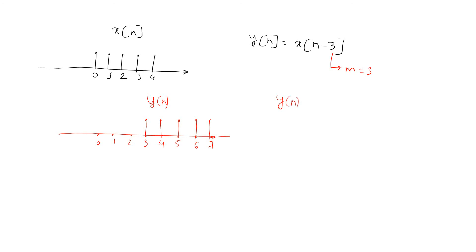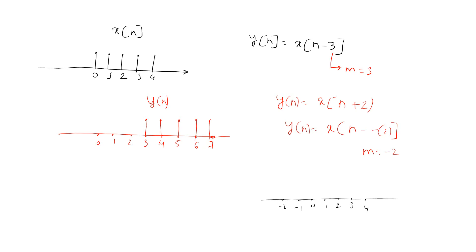Similarly, if y(n) = x(n − (−2)) = x(n + 2), then m is equal to minus 2, which is less than 0. It means y(n) is the same as x(n) shifted towards the left by 2 units. Here I will draw y(n). Say this is minus 2. So the signal begins from minus 2, that is minus 2, minus 1. So here y(n) appears between minus 2 and plus 2, which is the same as x(n) but shifted towards the left by 2 units.